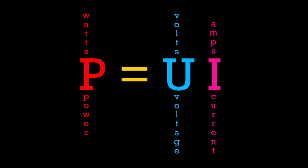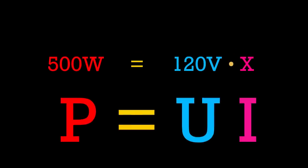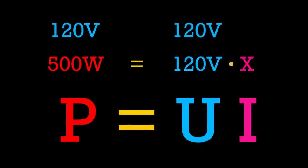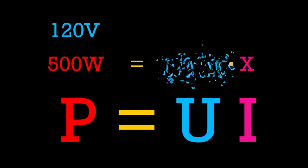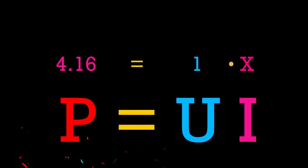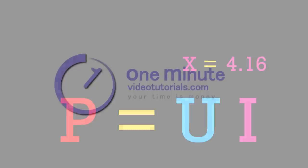So our equation looks like 500 equals 120 times X. To find out the value of X, we simply divide both sides by 120, so we'll end up with just one X on the right side. The left side becomes 4.16. So X equals 4.16 — in other words, using a 500 watt appliance in the US takes 4.16 amps.